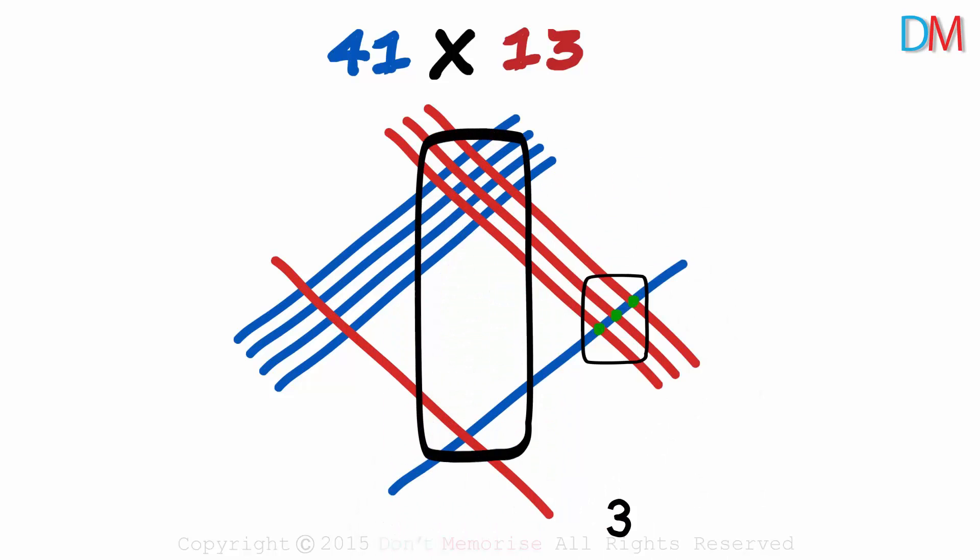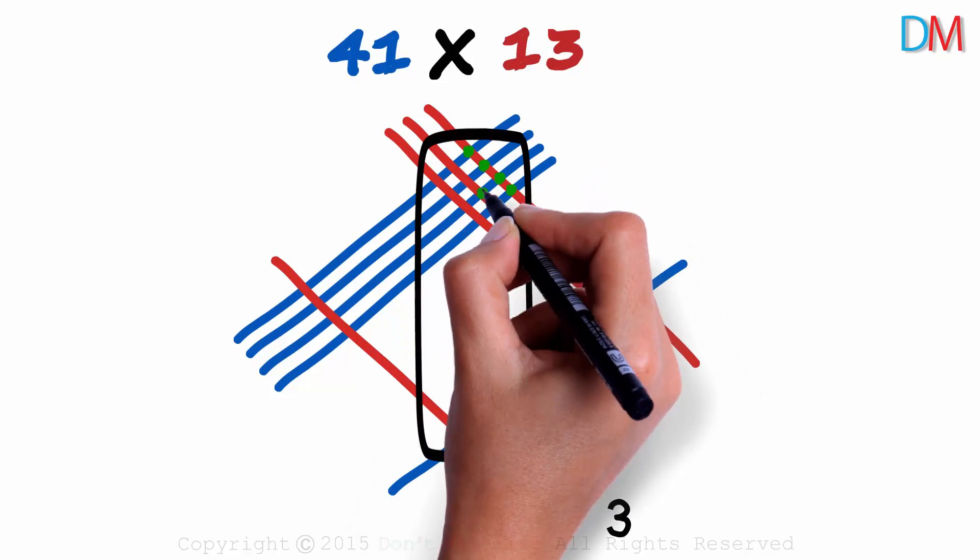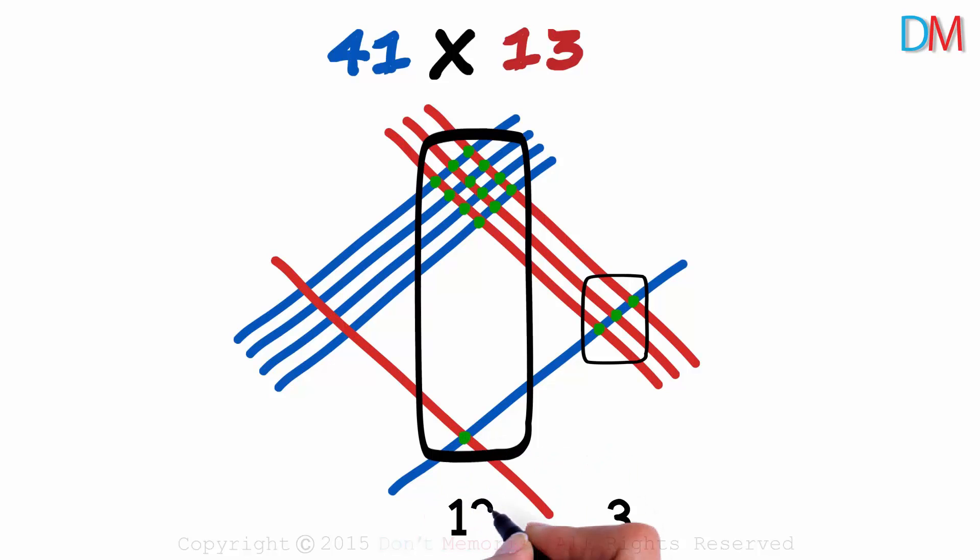Now for the second zone from the right. At the top, we can see that there are 12 intersections and there's one at the bottom. Thirteen in all.